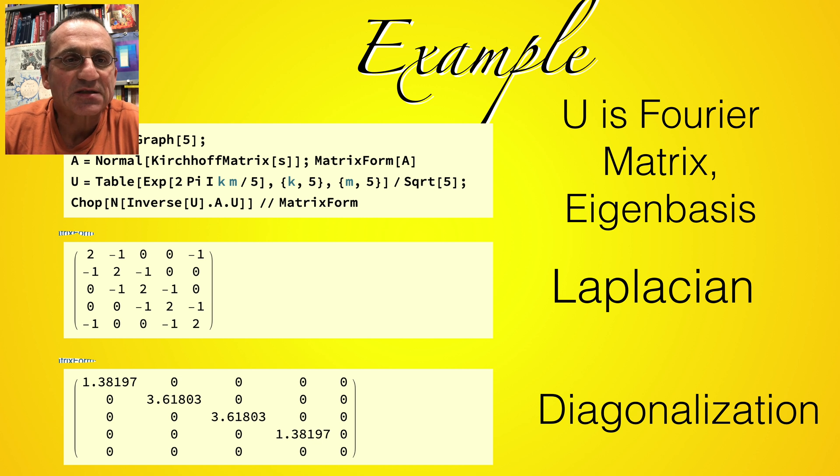So here is an example, this is a cyclic graph of these five nodes, and then the Kirchhoff matrix is that Laplacian. We actually then build this matrix u and then we diagonalize and you see you have a diagonal matrix, these are the eigenvalues of this Laplacian.